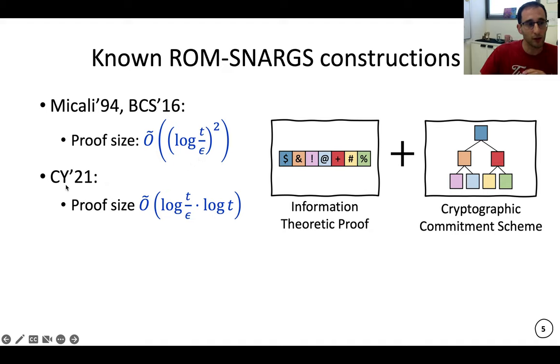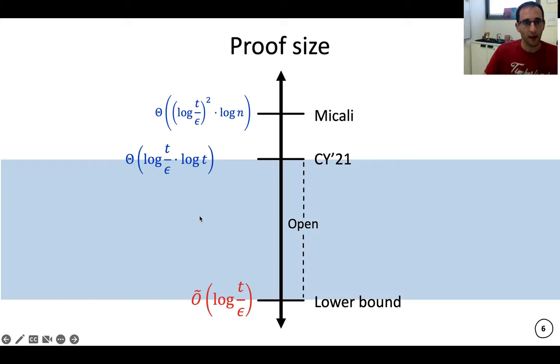In a recent work with myself and Alessandro Chiesa, we actually showed a variant of this construction that achieves log(t/ε)·log t, so slightly sub-quadratic. And if I put it on a scale, then we have the Micali, we have the CY construction, and then we have a trivial folklore lower bound on log(t/ε). But between these two, this is wide open.